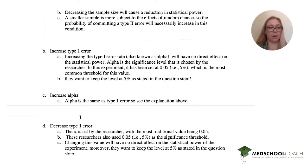If we decrease type 1 error, again, we're changing alpha. We don't want to change alpha. The experimenter, the researcher said alpha is going to be 0.05 and we can't change that.